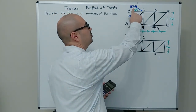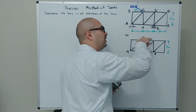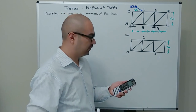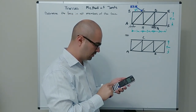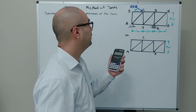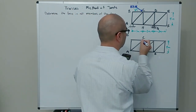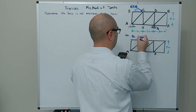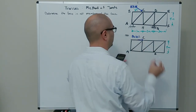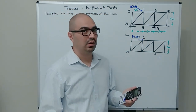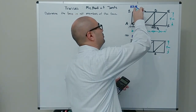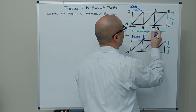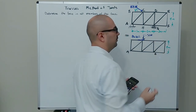The horizontal component of the 100 newton force points in the positive x direction. Since we know the angle is 30°, the horizontal component is 100 times cosine of 30, which gives 86.603 newtons. The y component is 100 times sine of 30, pointing downward, which equals 50 newtons.